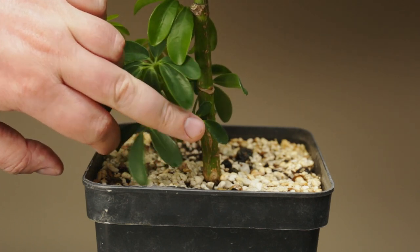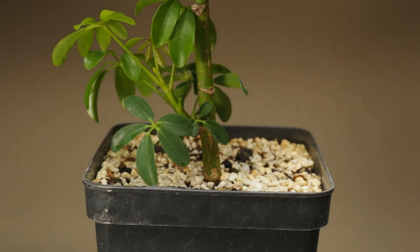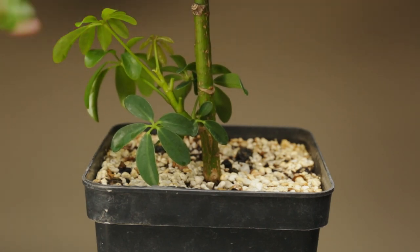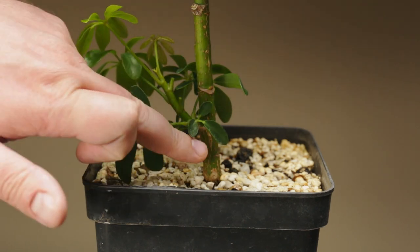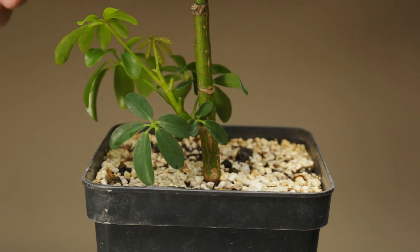There are two leaves here that are preventing the light from reaching the growing tip on this branch, so I'm going to cut them off. I'll let this branch grow for now to help thicken up the lower trunk, and I'll decide later if I'm going to use it in the tree design.